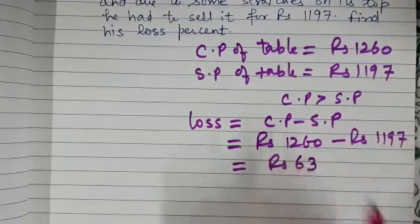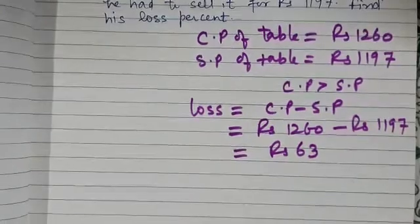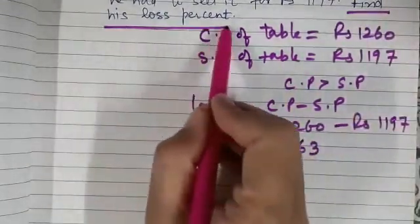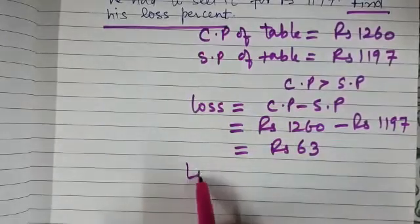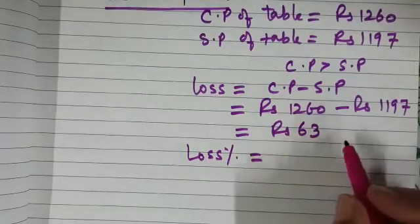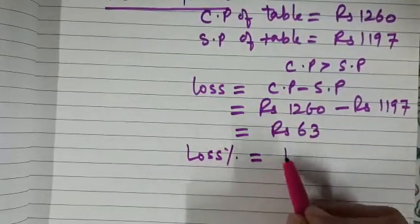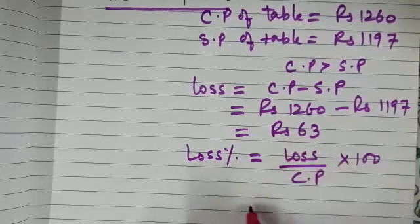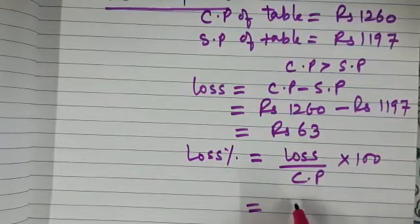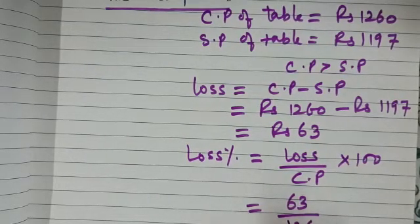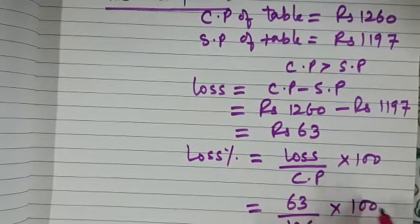Now in this question we need to find his loss percent. So what is the formula for loss percent? We know that loss percent is calculated on the cost price and it is given by loss upon CP into hundred. So let us calculate this: loss is 63 rupees and cost price is 1260.